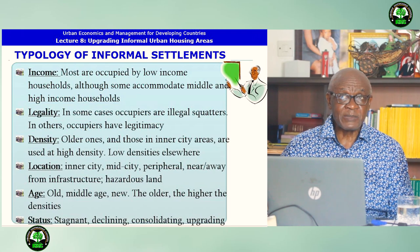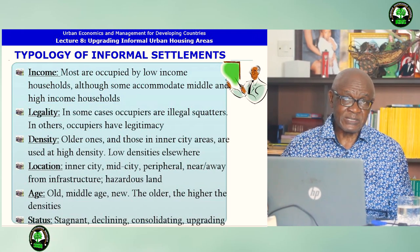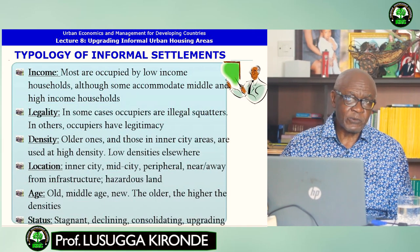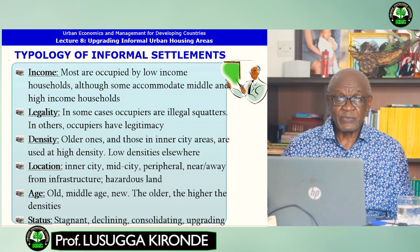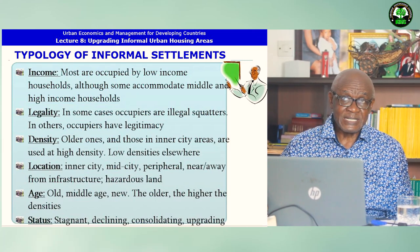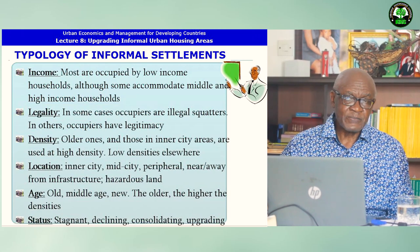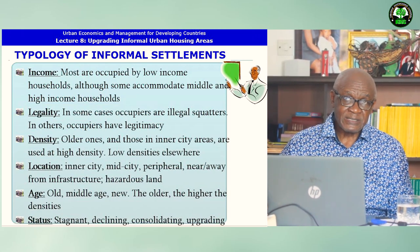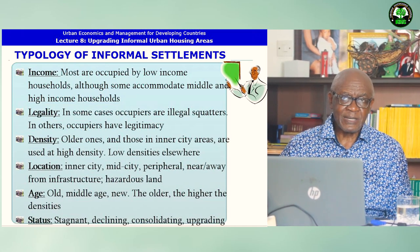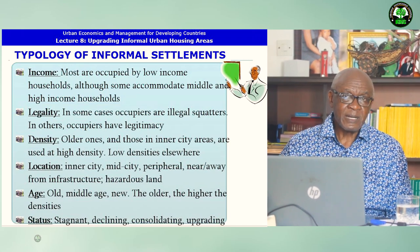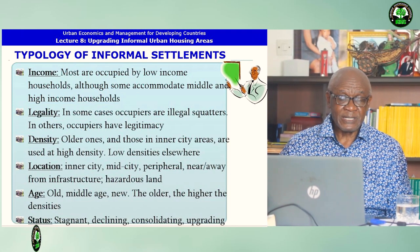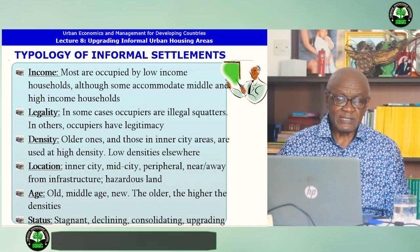We can attempt to have a typology of informal areas. We can categorize them by income: most are occupied by low-income households, although some, especially in Africa, accommodate middle and high income households. We can look at their legality: in some cases occupiers are illegal squatters, in others the occupiers have legitimacy. We can classify them by density: older ones and those in inner city areas are used at high density, but at the periphery they are used at low densities. We can look at their location — whether inner city, mid city, peripheral, near or away from infrastructure or on hazardous land. We can classify them by age: some are old, some are middle age, some are new — the older, the higher the densities. And we can classify them by status: whether they are stagnant, declining, consolidating, or upgrading.